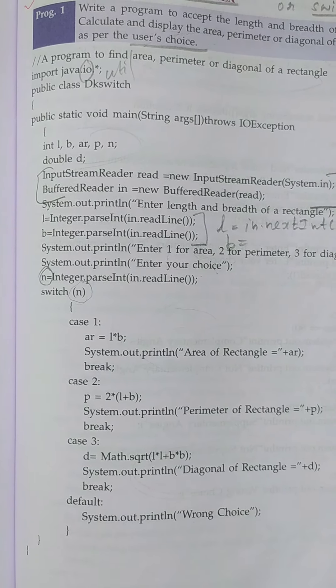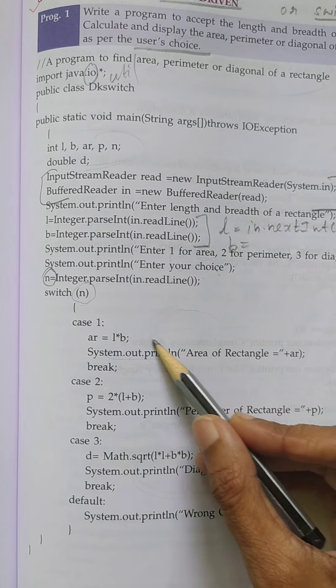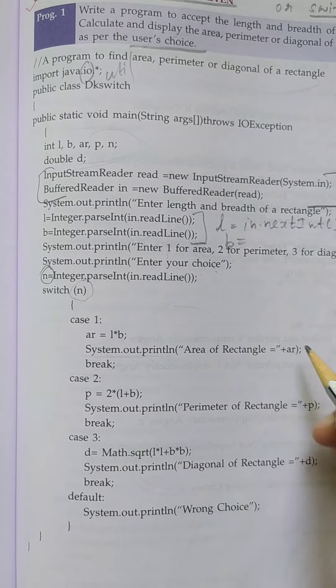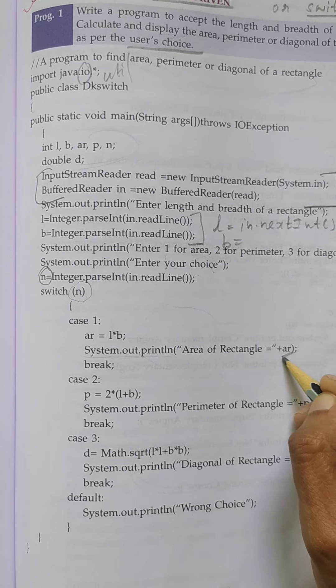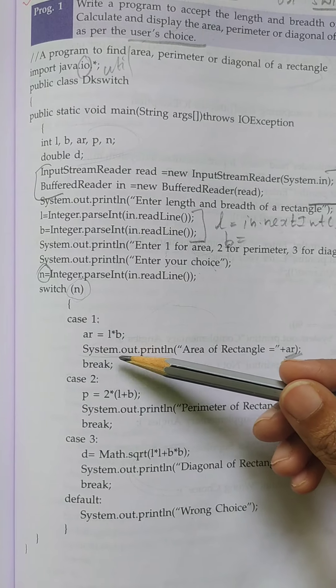You are entering the formula to find the area: a = L * B. Normally System.out.println, you are entering the stored result. Finally, you have to give a break statement. Then only this case will stop.